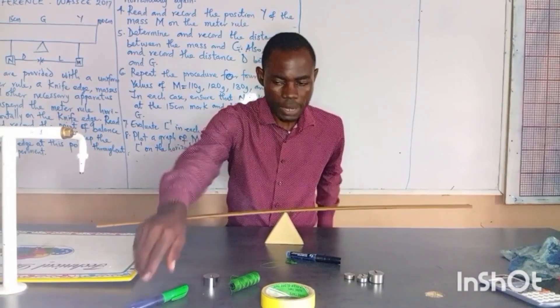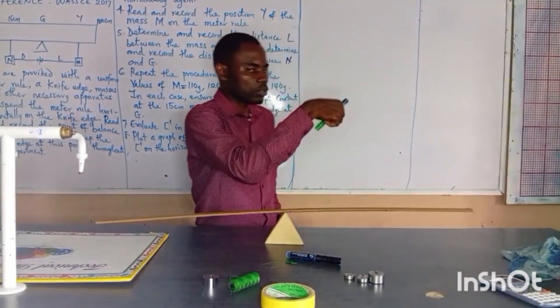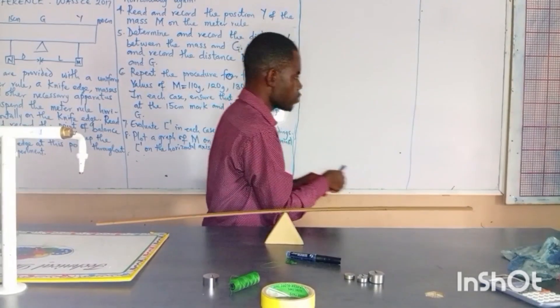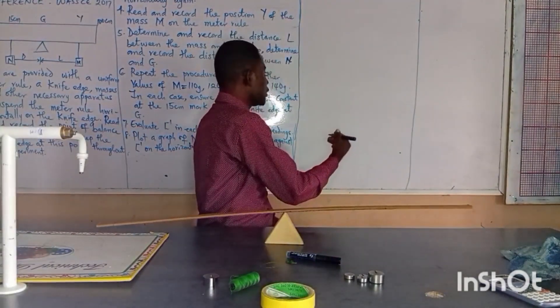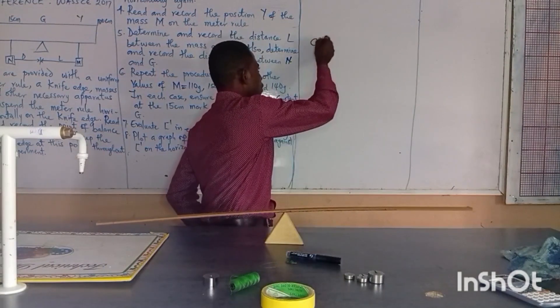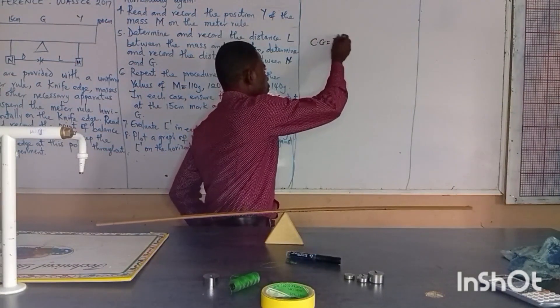My distance balances at 50. Please make sure whenever you are carrying out this experiment, the environment is free from air. Several times we've been saying it in our videos. Please take note of that. So I will not stand up for now. After the experiment I will start. So I have my G, my center of gravity as 50 centimeters.